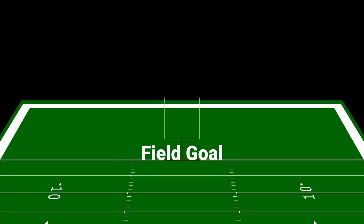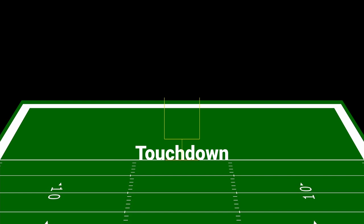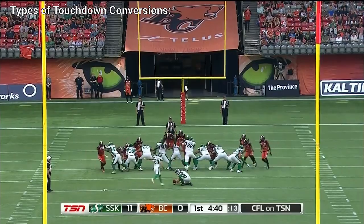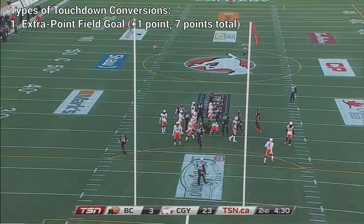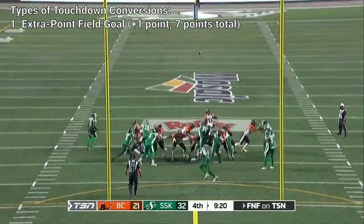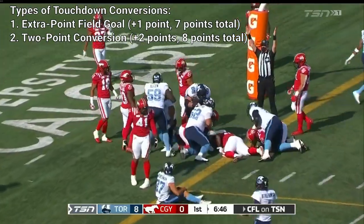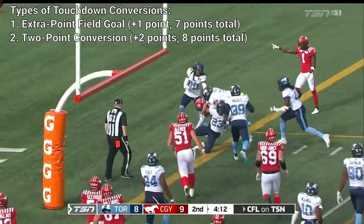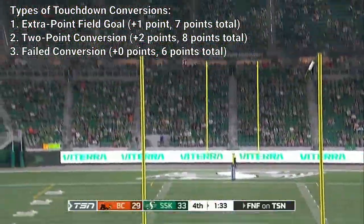A field goal is scored when the offense kicks the ball over the crossbar and between the uprights. When a player brings the ball into the opponent's end zone, they have scored a touchdown. This touchdown is initially worth six points. From here, the offense has to choose to convert that touchdown to either seven or eight points. The safest and most common conversion is the one-point conversion field goal, set up just like a normal three-point field goal. The other method is the two-point conversion touchdown, where the offense is given one chance to score a second touchdown. A successful conversion will see the touchdown valued at eight points. If either conversion fails, the offense still retains their initial six points.